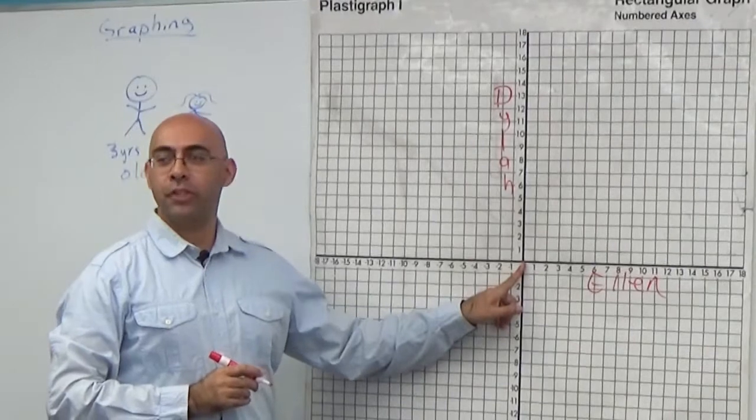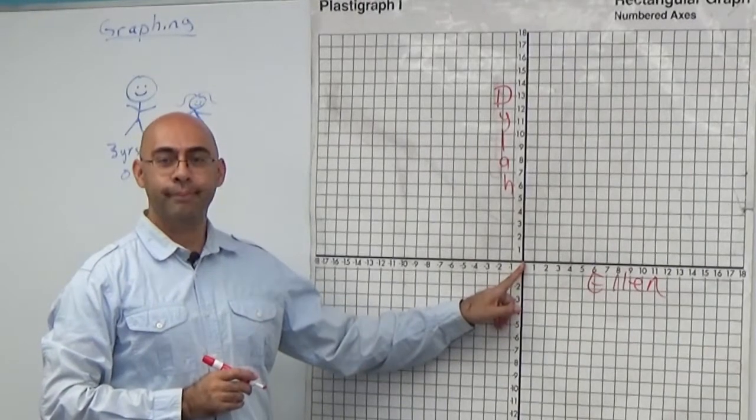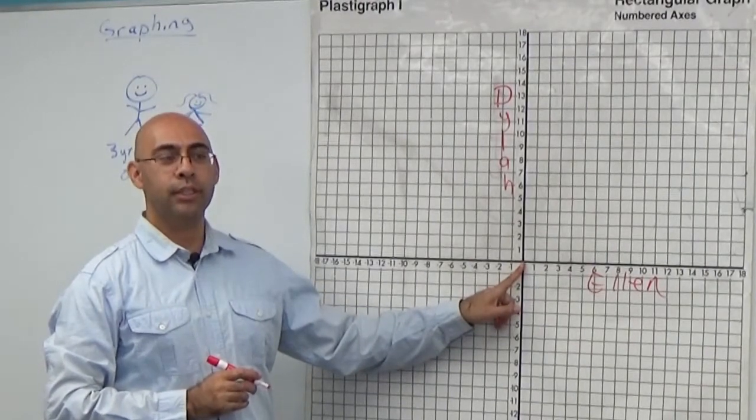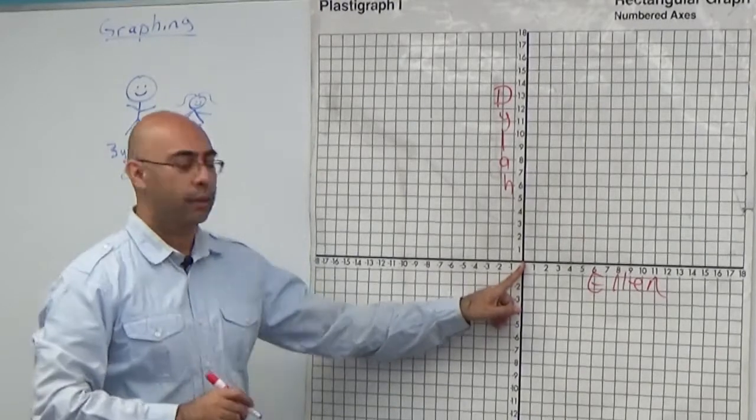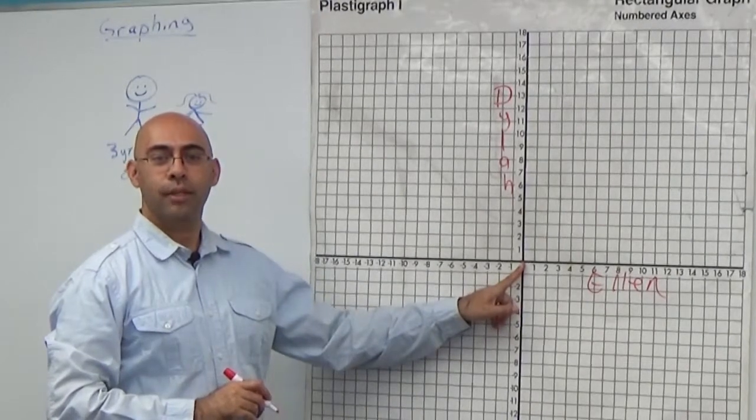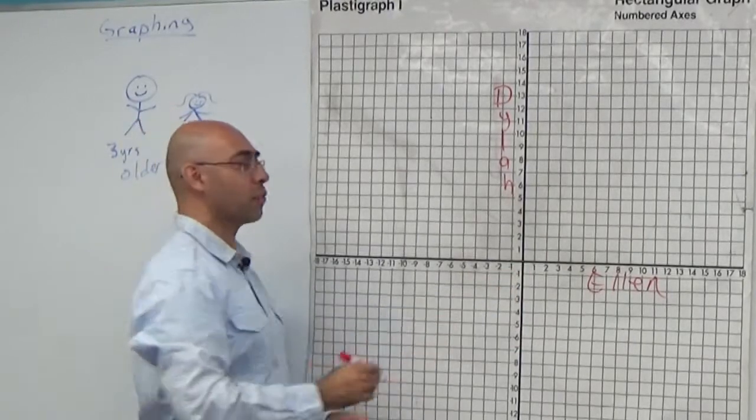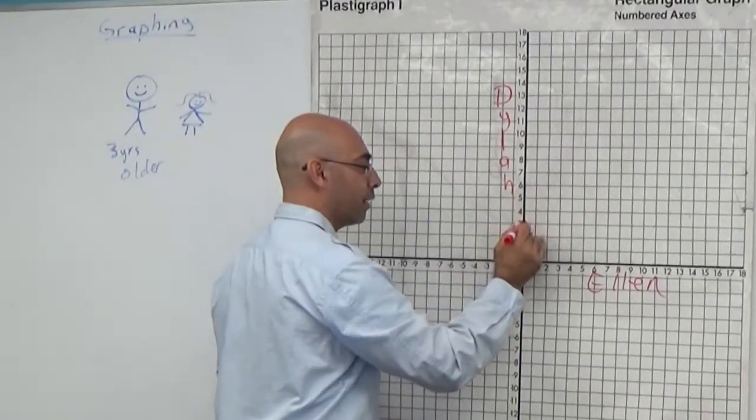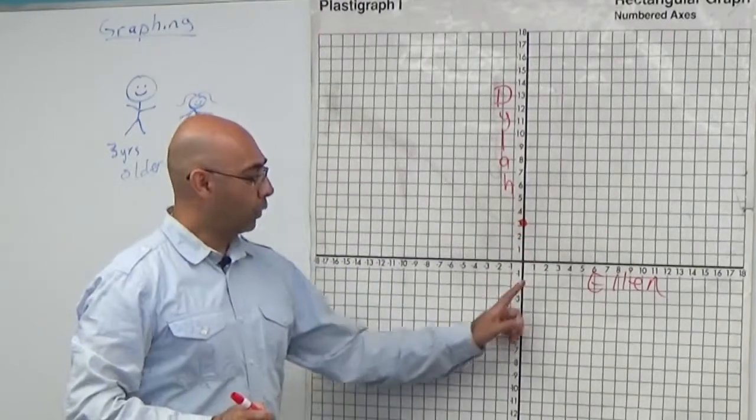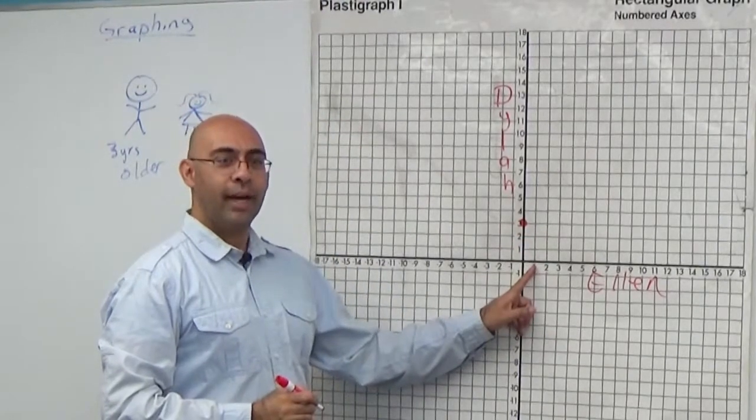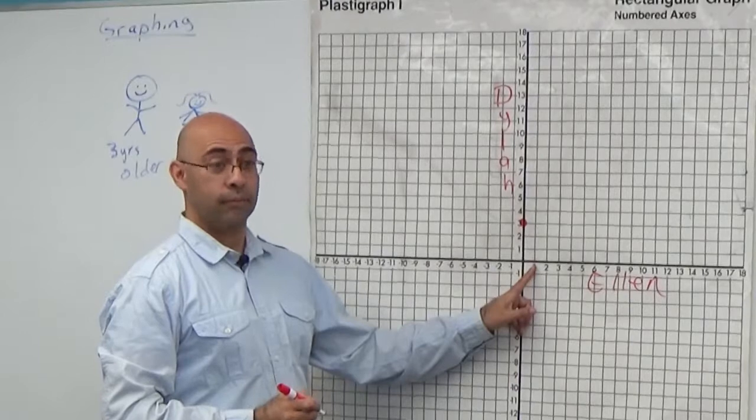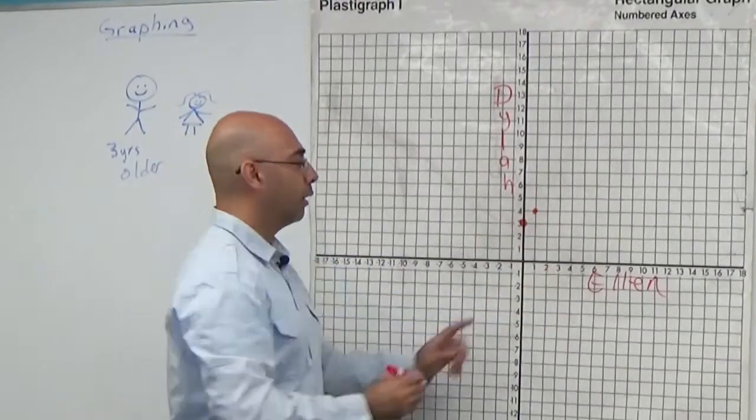So at year zero, when Ellen was born, how old would Dylan be? Three. Three. So at year zero, zero plus three is three. When Ellen was one, how old was Dylan? Four. Four. Three plus one is four, right?